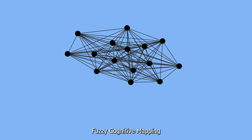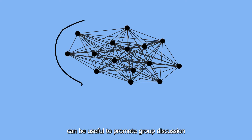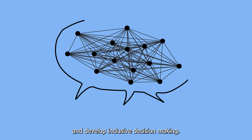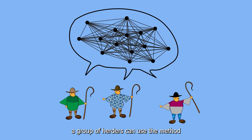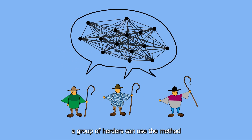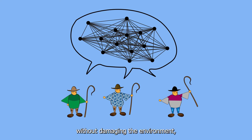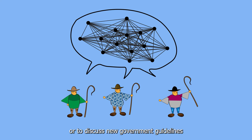Fuzzy cognitive mapping can be useful to promote group discussion and develop inclusive decision-making. For example, a group of herders can use the method to find ways to grow their business without damaging the environment, or to discuss new government guidelines and their possible effects on sheep farming.